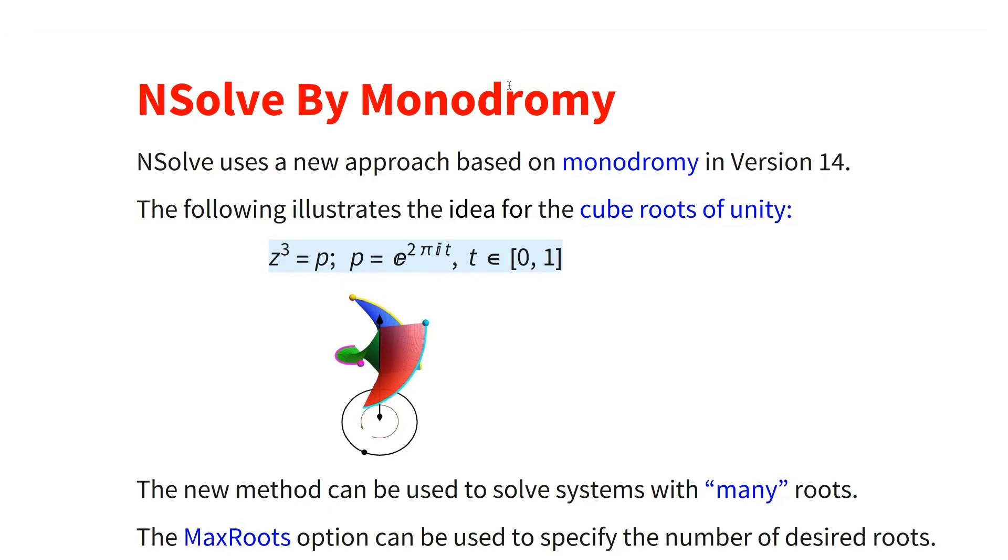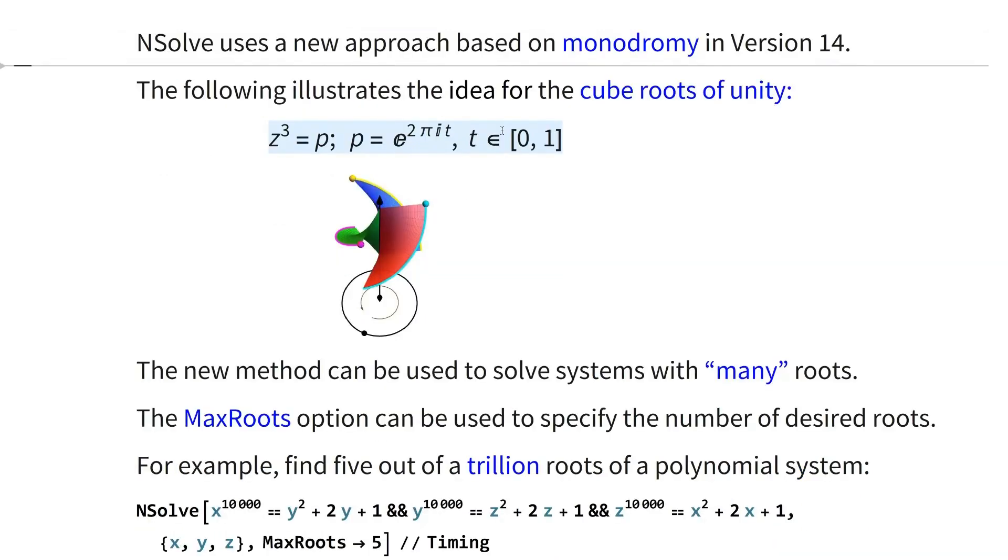So in version 14, we are using a concept called monodromy to improve things for NSolve. So let's say you want to solve the equation z cube equal to one, the cube roots of unity. Of course, you know one of them. One cubed is one, but there are two more.